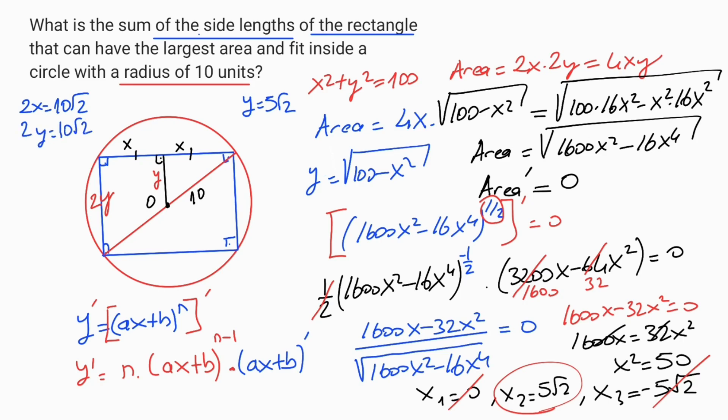So sum of the side length of the rectangle equal 20 root 2. The result from the equation means that the rectangle with the largest possible area that can fit inside a circle should be a square.